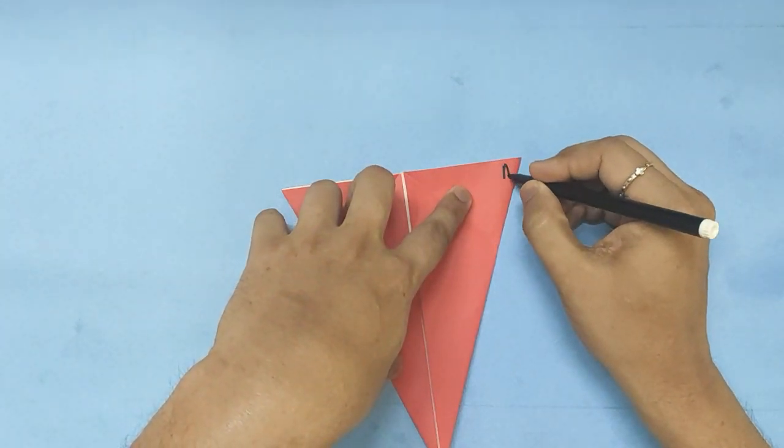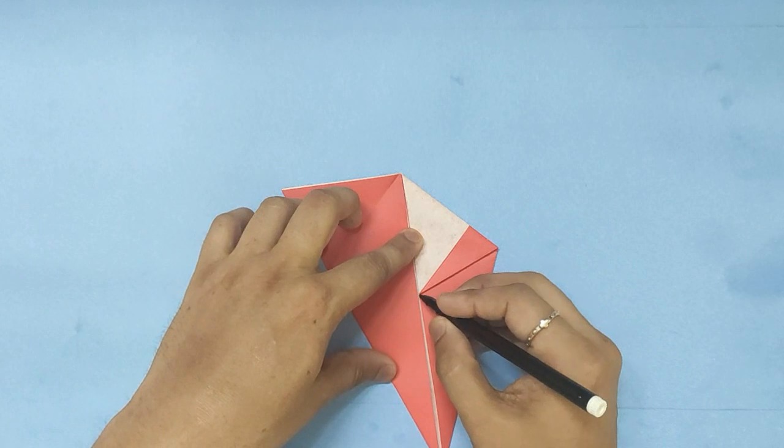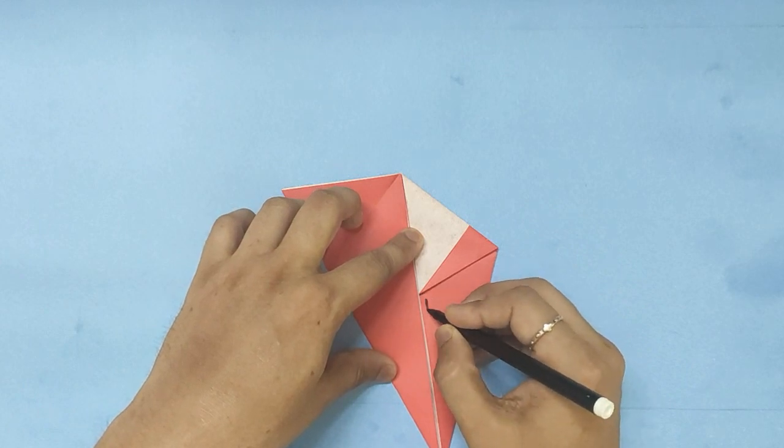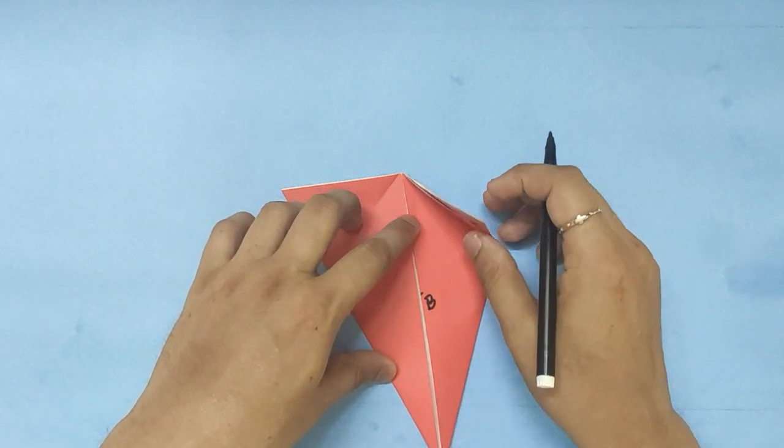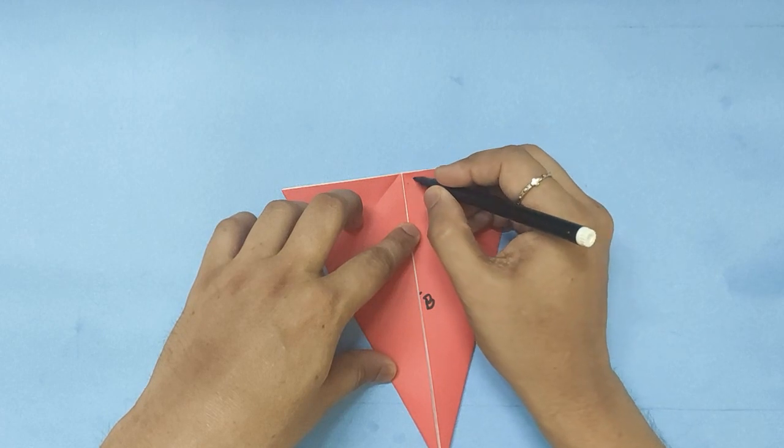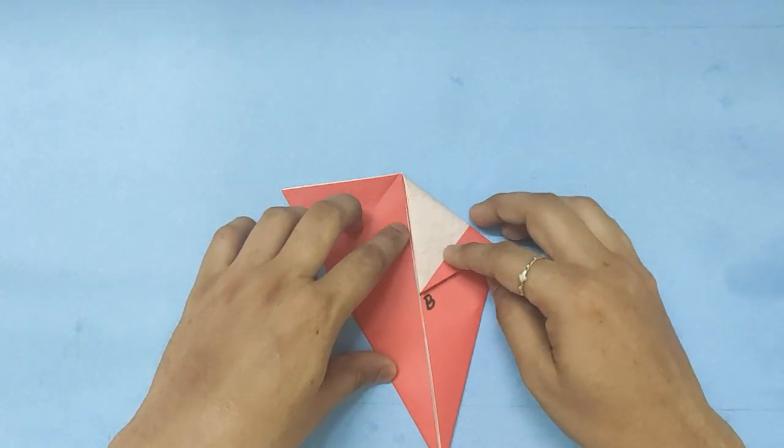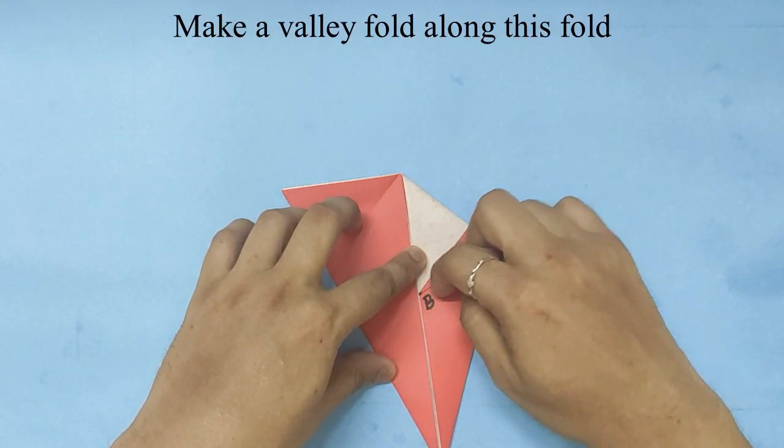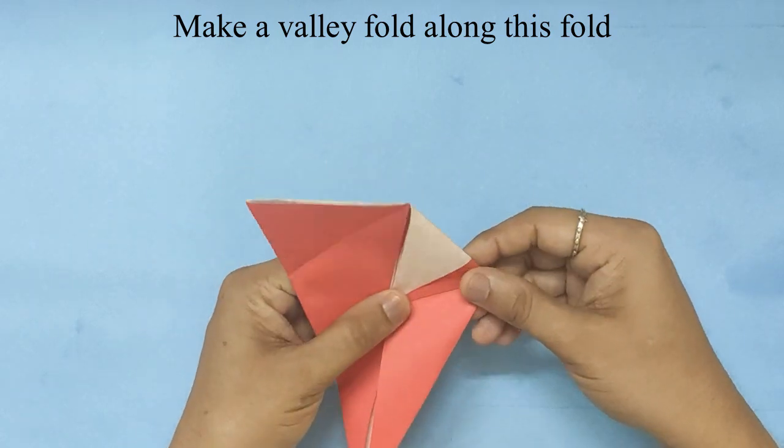Let's take that point to be A, that point B, and that point C. We will make a valley fold on that line there.